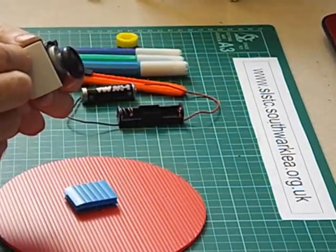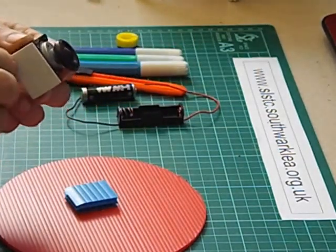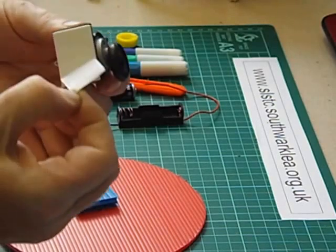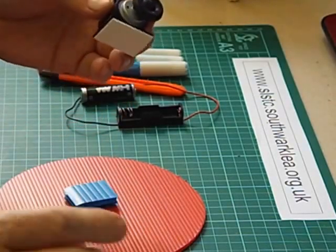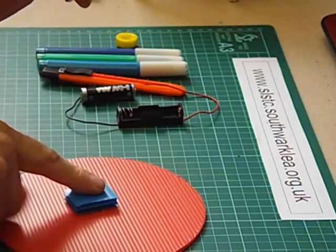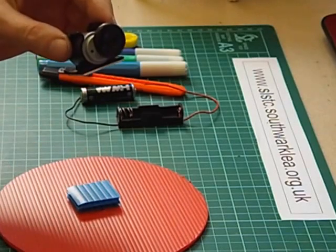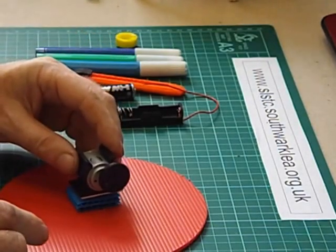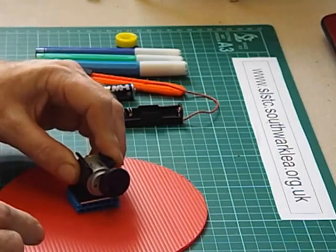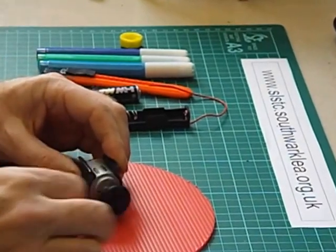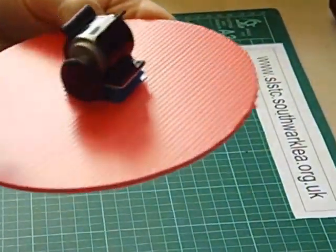And these motor clips have got a self-adhesive base. So you just pull the paper backing off and stick that down. If you don't have these motor clips we could have just glued the motor down onto there with a glue gun. So we'll glue that onto there. And again check that the cam can spin round.